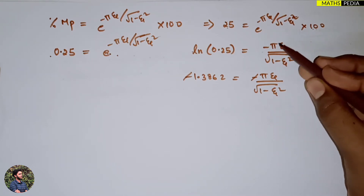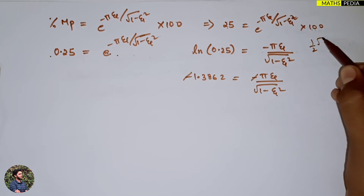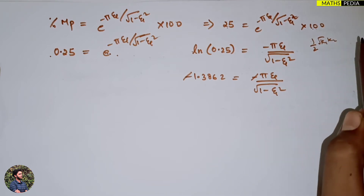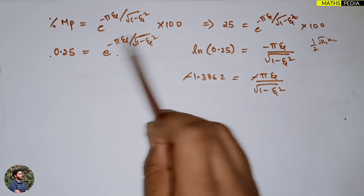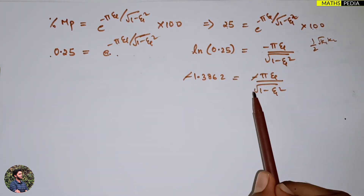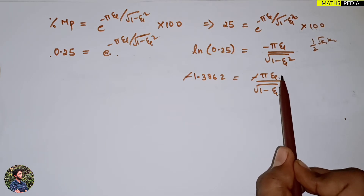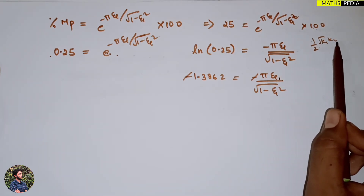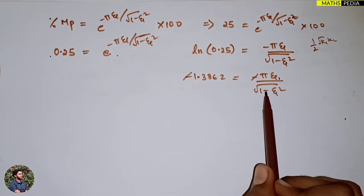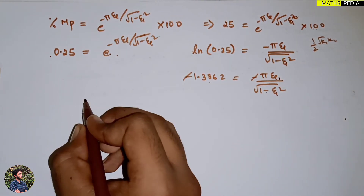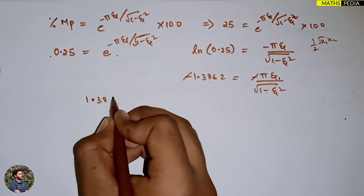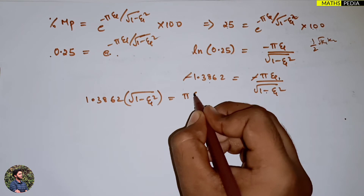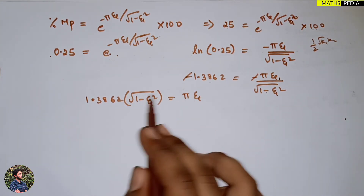Note: we are not substituting ζ = (1/2)·√(k1·k2) here because k1 and k2 are unknown. This equation has only one unknown, ζ, so we can solve it directly. Rearranging: 1.3862·√(1−ζ²) = πζ. Squaring both sides to remove the square root.